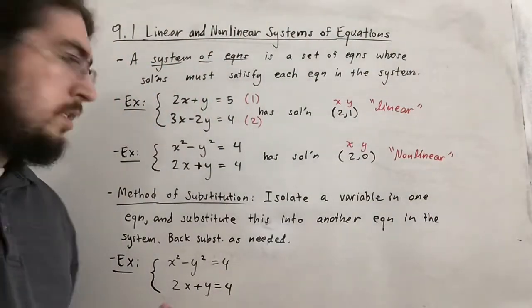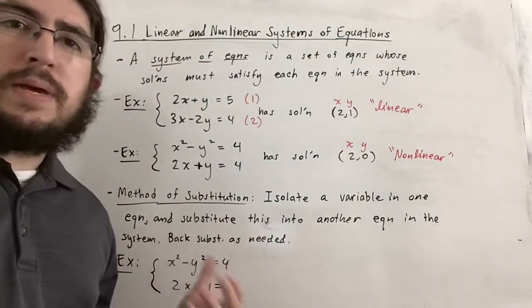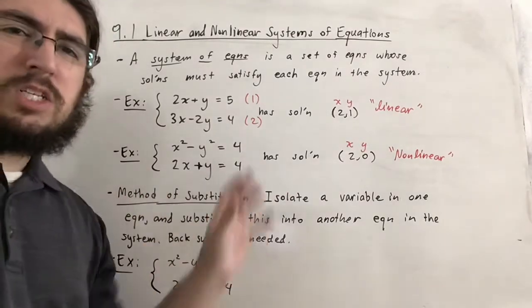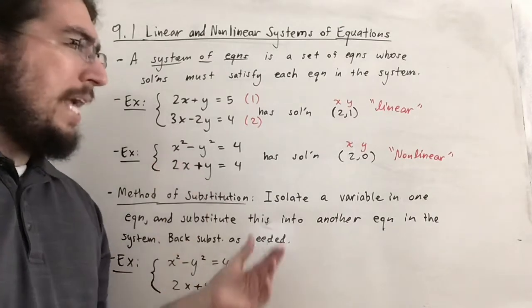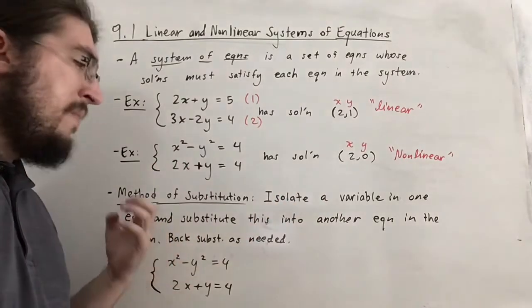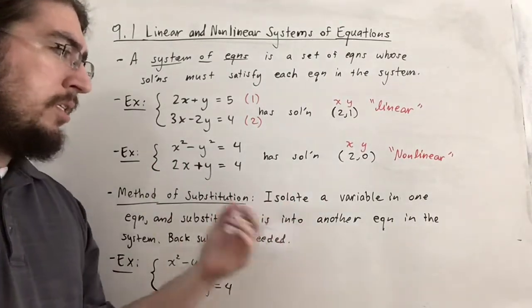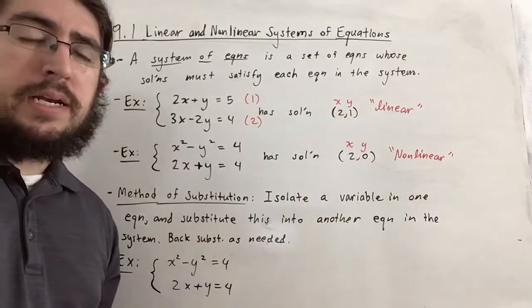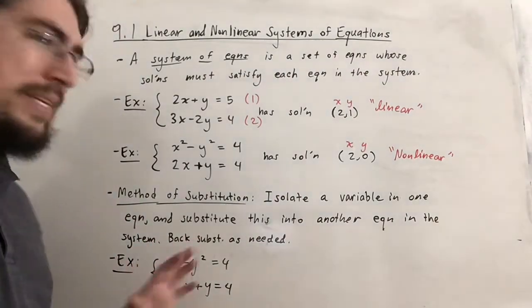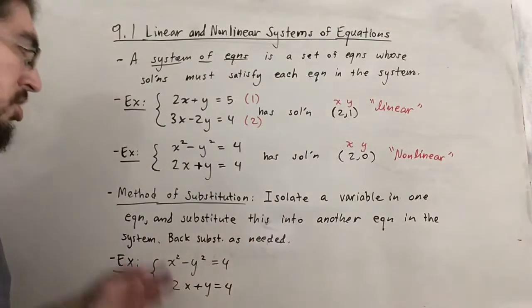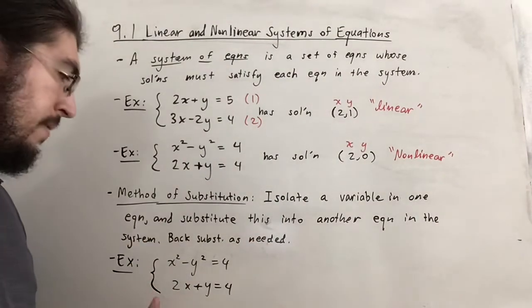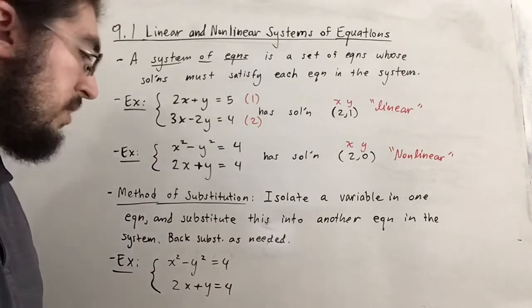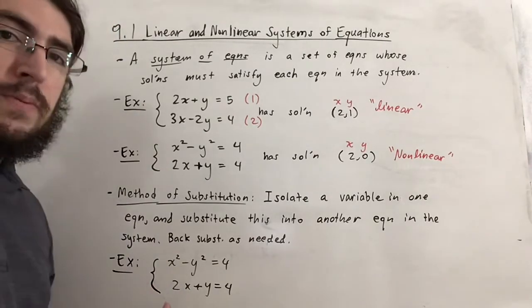The next thing I want to talk about is the method of substitution, which is a method to actually solve systems of equations. We isolate a variable in one equation and substitute it into another equation in the system, then back substitute as needed. As an example, I'm going to solve the second system using substitution. The first thing is to isolate one of the variables.